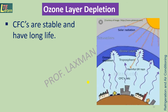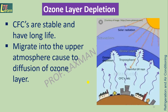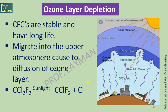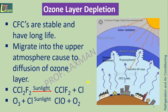Chlorofluorocarbons are stable and have a long life. When they migrate into the upper atmosphere, they cause diffusion of the ozone layer. In that process, formation of chlorine atoms takes place. When these chlorine atoms react with ozone, chlorine oxide and oxygen are formed, resulting in ozone layer depletion.